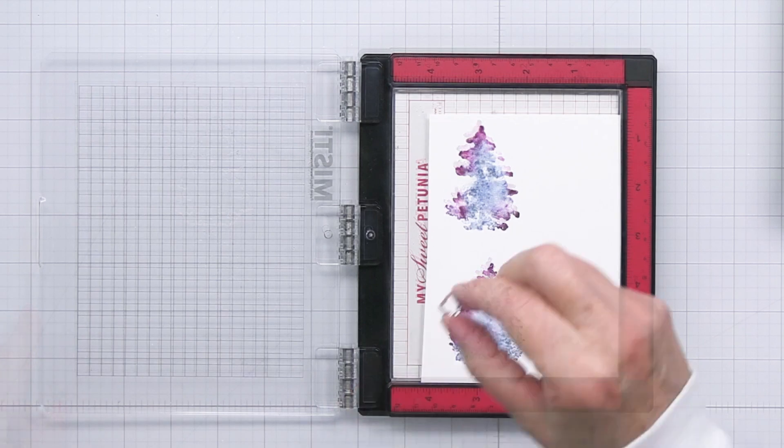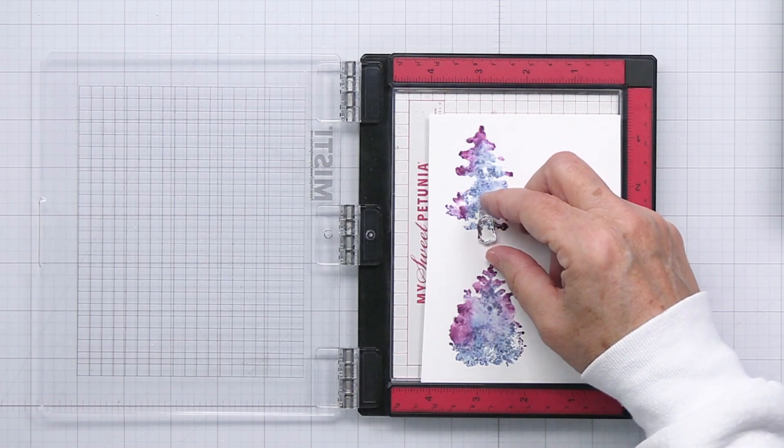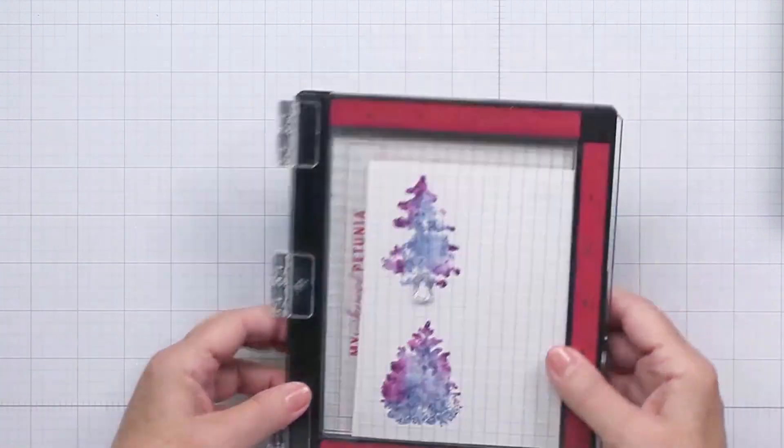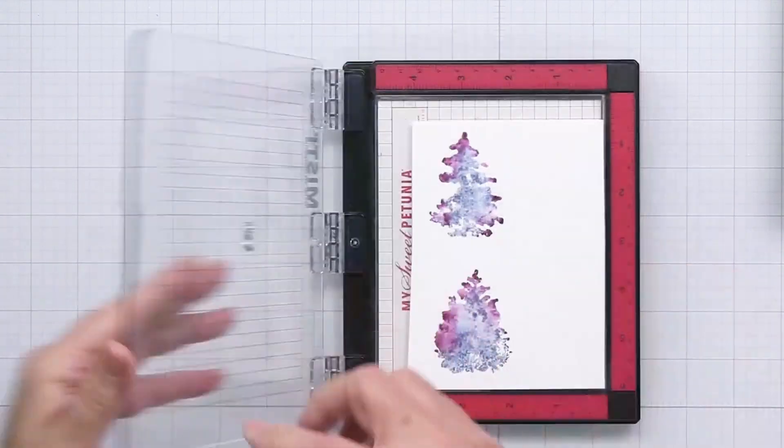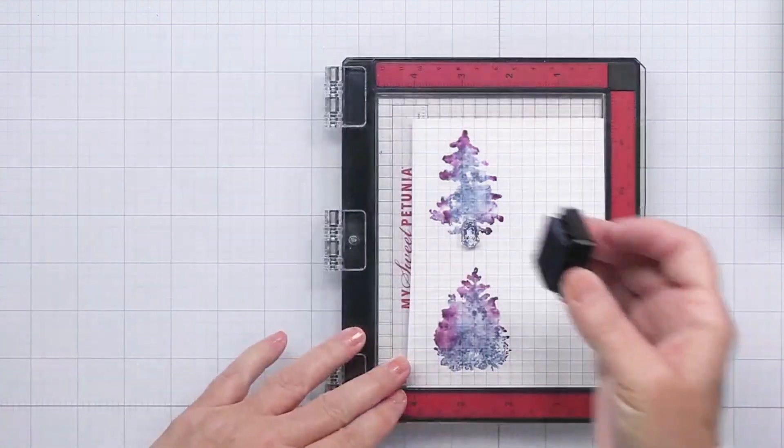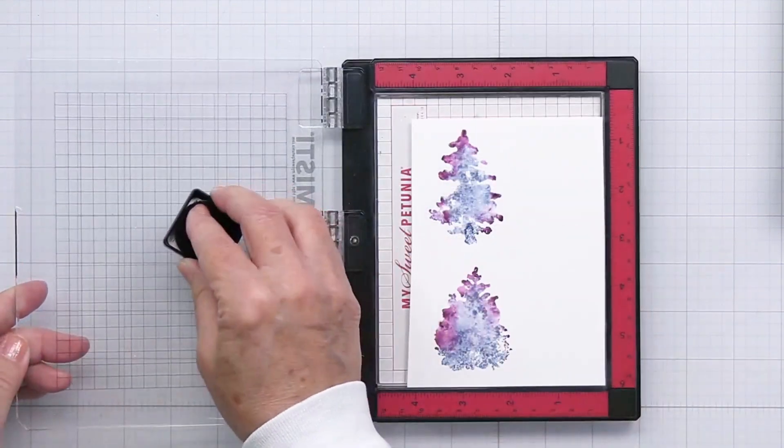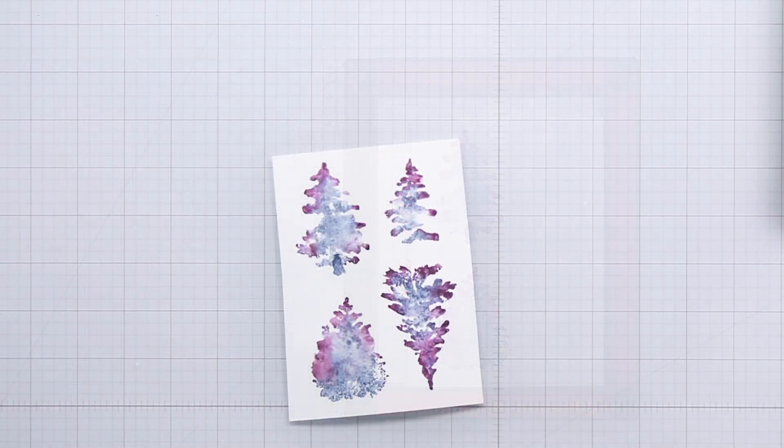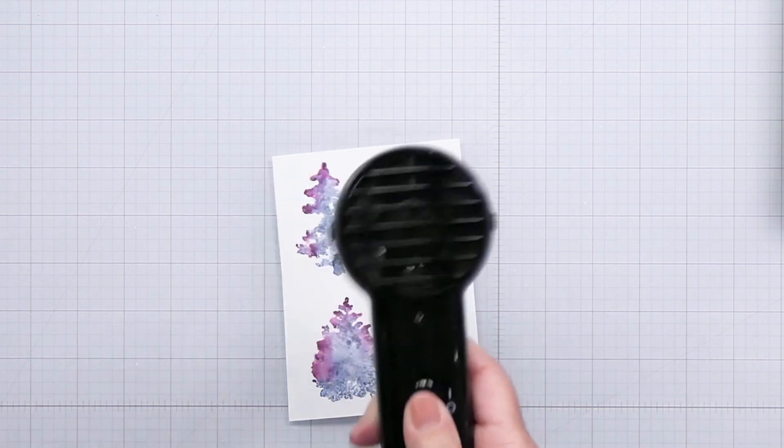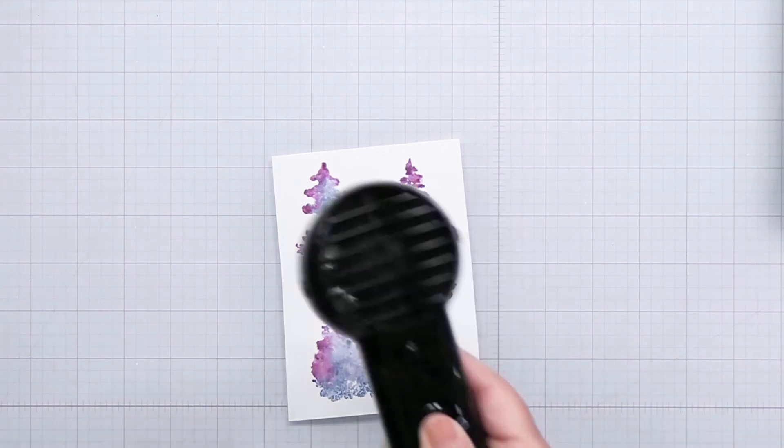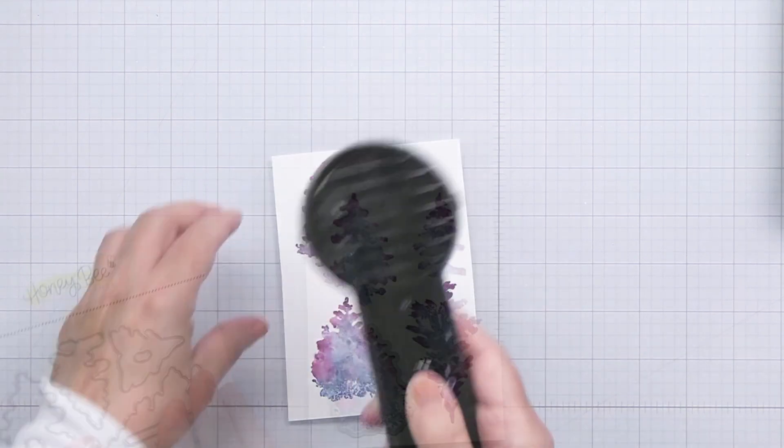I'll go ahead and clean those stamps. I wanted to show you there are stumps for some of the trees. If you're not wanting to die cut these, you could stamp the stump directly onto the tree, but there is a separate die for the stump as well. So if you want to die cut the stumps with the tree, you have to stamp the stumps separately. There's lots of different ways that you can use these, so just be creative and you'll come up with something really cool.